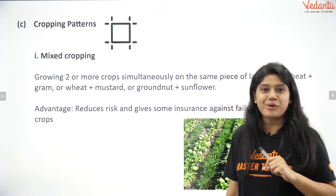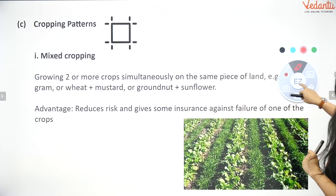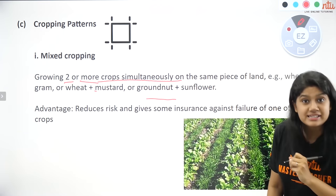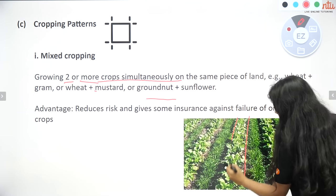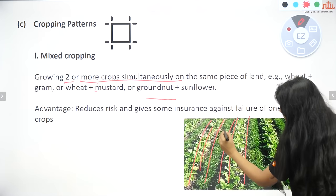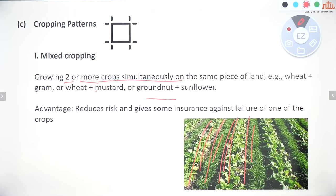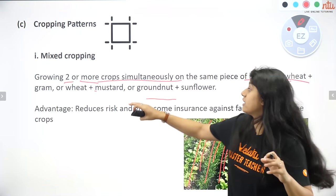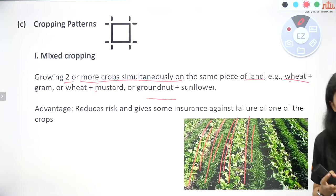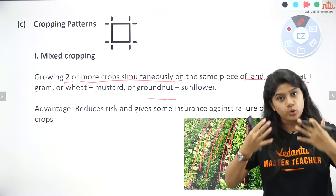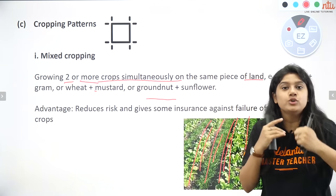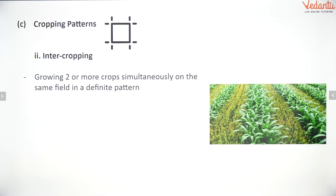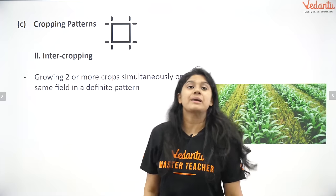An important exam topic is cropping patterns. First is mixed cropping: the growth of two or more crops simultaneously on the same land. For example, wheat can be grown along with gram, mustard, groundnut, or sunflower. Two or more crops are grown on the same piece of land simultaneously, making better use of land for higher production.